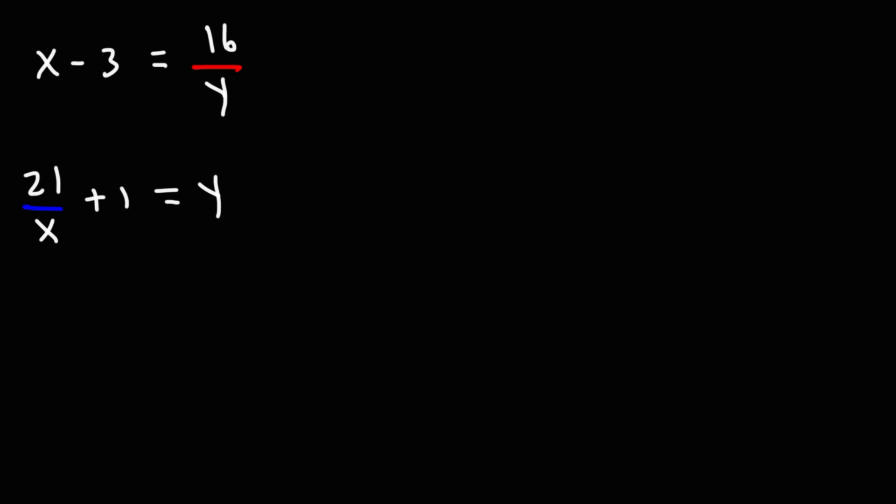Now, what am I going to do in this problem? So for this one, it's already equal to y. I'm going to adjust the first equation to solve for y. In order to do that, I'm going to raise both sides of the equation to the negative 1 power. So on the left, we get 1 over x minus 3. On the right, when we flip it, it's y over 16. Multiplying both sides by 16, I get that 16 over x minus 3 equals y.